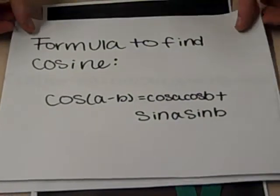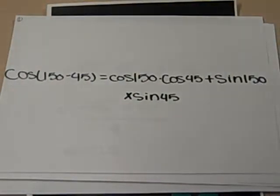Let's plug in our known values. A can be 150 or 45, it doesn't matter. Now, our equation will look like this: Cosine of 150 minus 45 equals cosine 150 times cosine 45 plus sine of 150 times sine of 45.